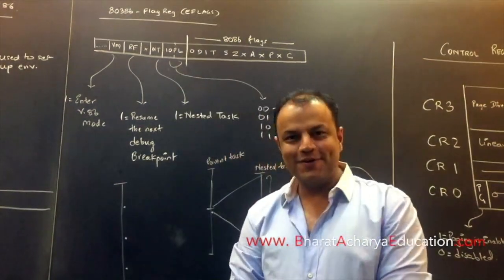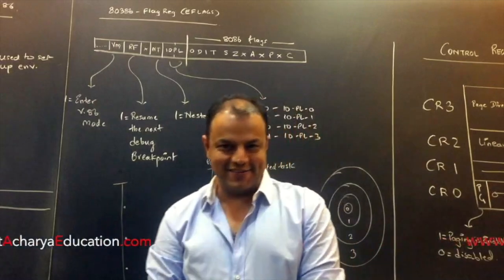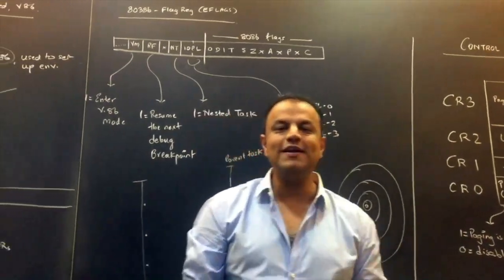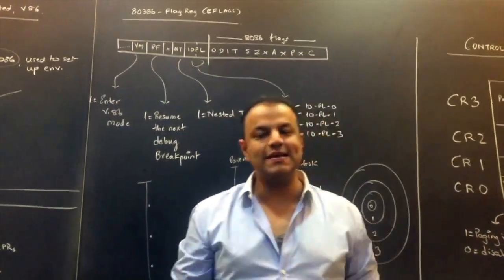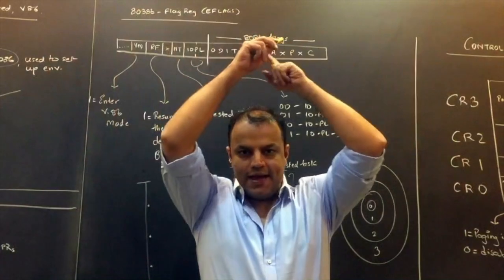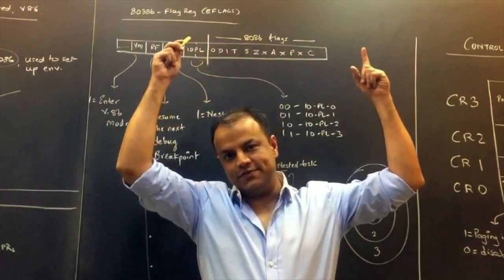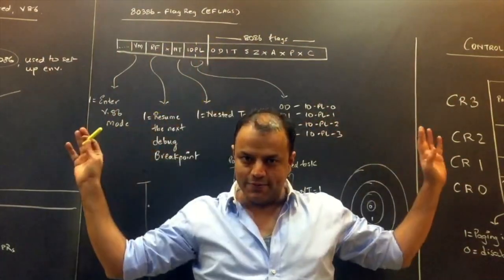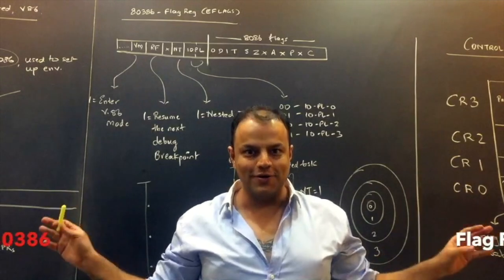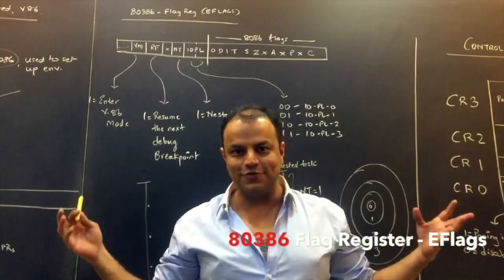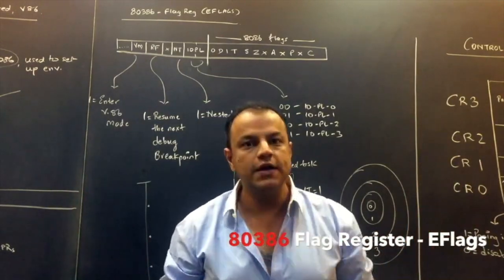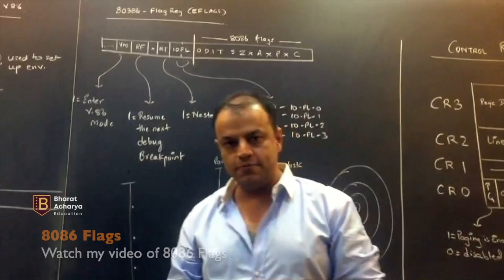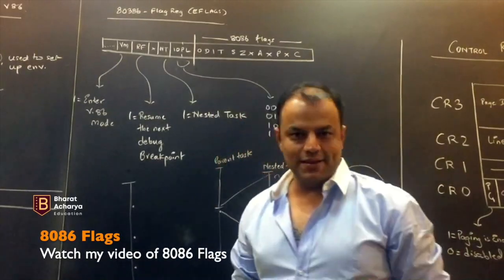In this video we're going to learn the flag register of the 386, called E-FLAGS — extended flags. It mainly has the flags of 8086, which I've covered in a whole one-hour video showing how those flags work, including interesting ones like overflow. I'm not explaining them again — please check out the video on the 8086 flag register for that.